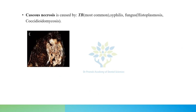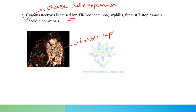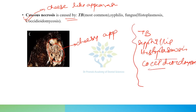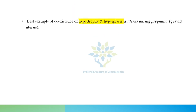Now caseous necrosis — it has a cheese-like appearance. Where do we see caseous necrosis? We see it in TB, syphilis, histoplasmosis, and coccidiomycosis.